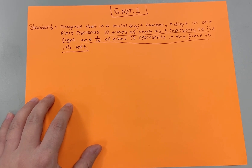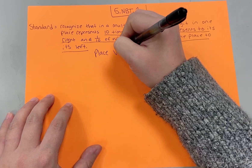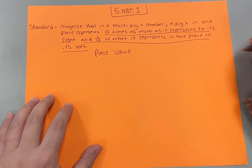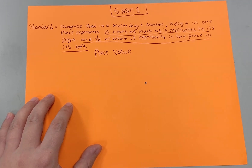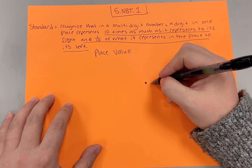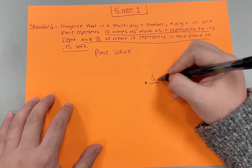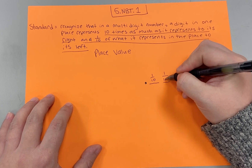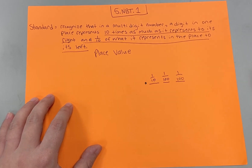Essentially, what students need to know for this is place value. They need to know that the decimal point is their point of reference. Behind the decimal point we have the tenths, the hundredths, and the thousandths.